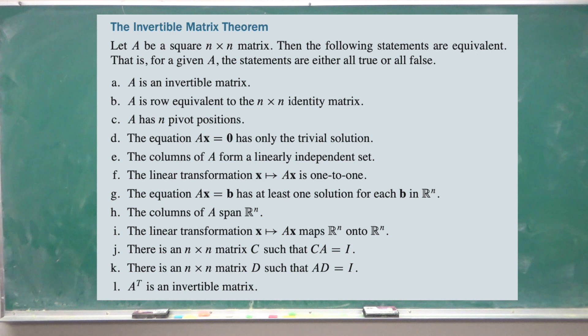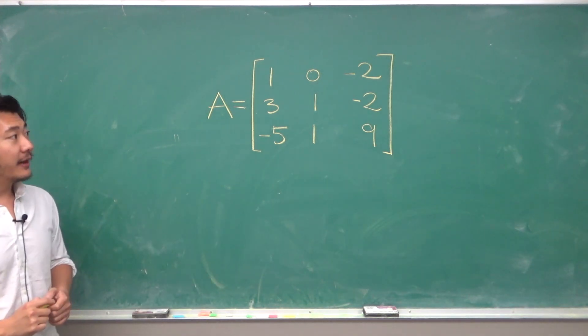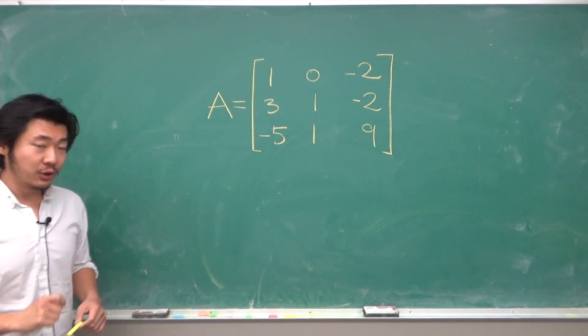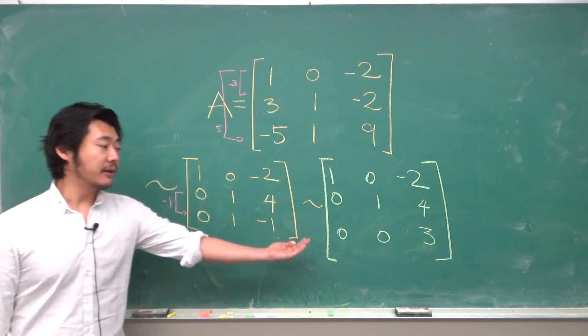So the heart of the Invertible Matrix Theorem is more or less this. Suppose we have this matrix then if we row reduce to echelon form then the echelon form will be this matrix.